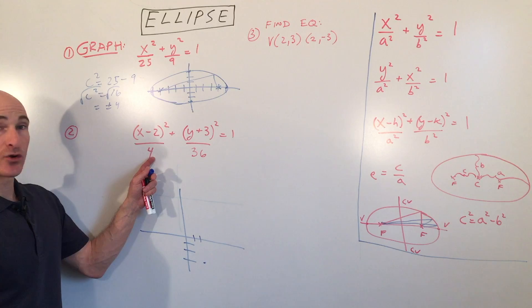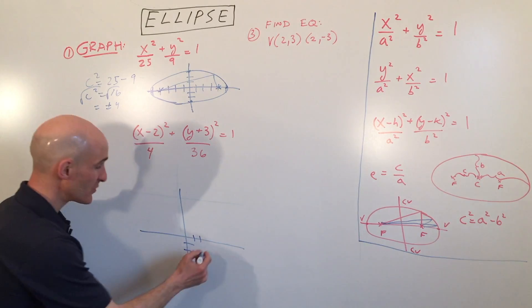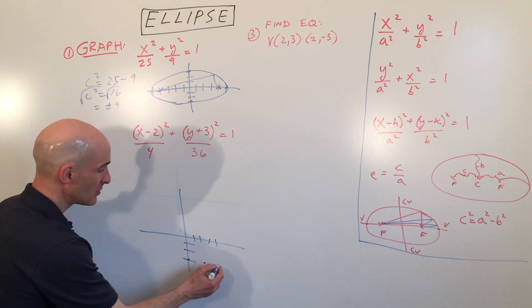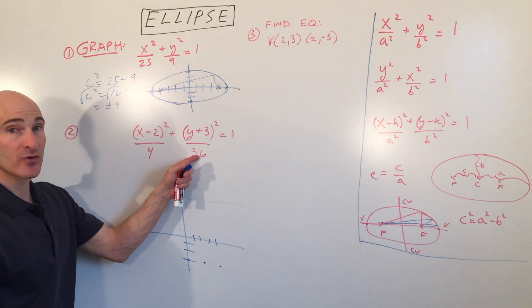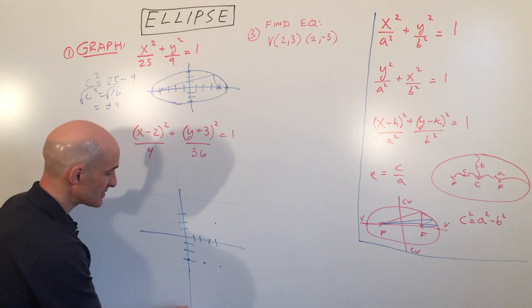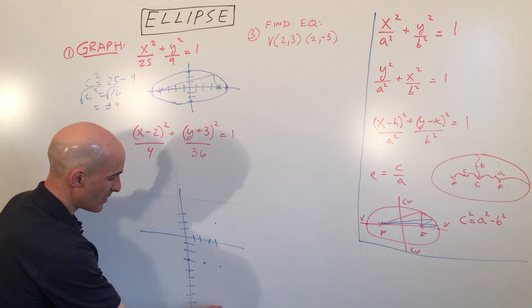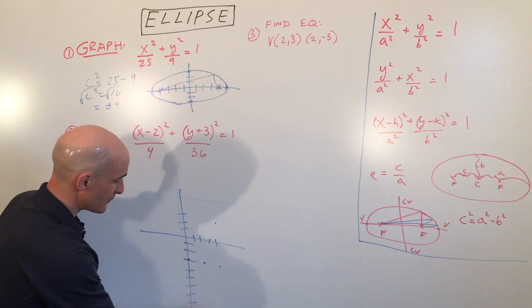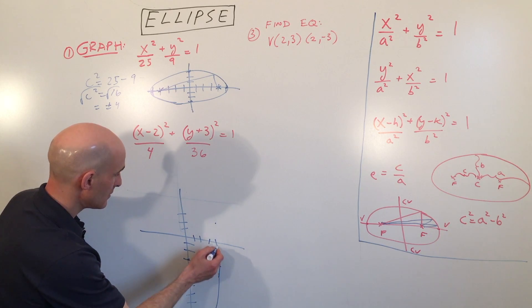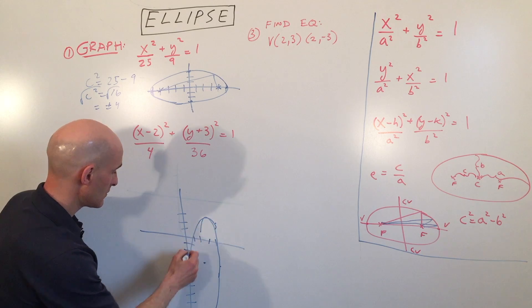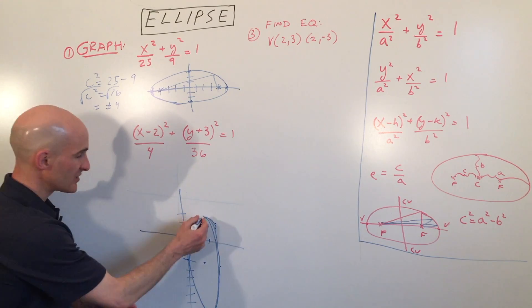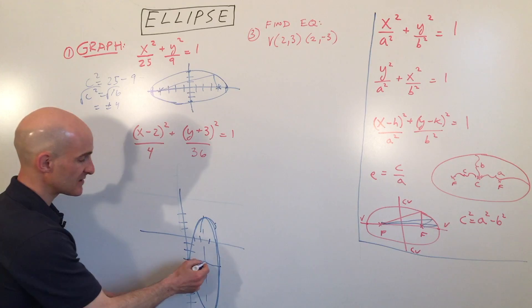From the center, we go 2 in the x direction — the square root of 4 is 2 — so right 2 and left 2 from the center point. In the y direction, the square root of 36 is 6, so up 6 and down 6. With those points plotted, the ellipse is drawn through them. This gives us the major axis in the vertical direction and the minor axis horizontally, with the center point marked.